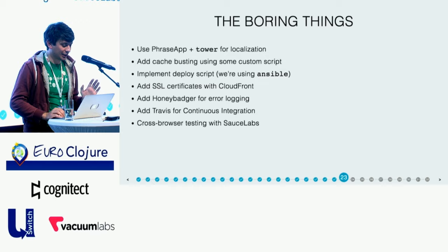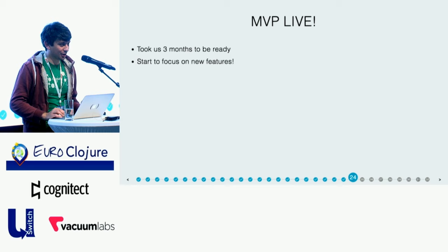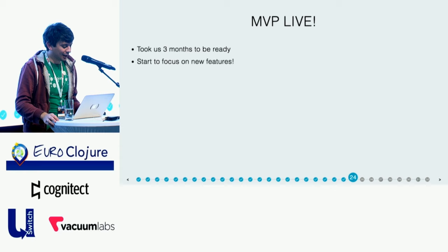Of course, we had to add the usual continuous integration tool — we used Travis for that, which means every time we push our code to our GitHub repository, the tests would be run automatically. And we made sure to run a full battery of cross-browser testing using SauceLabs. So after we took care of all those details, we actually went live with a minimum viable product. It took us three months to get there, from the first commit to actually going live. And from there on, we were able to focus on adding new features.